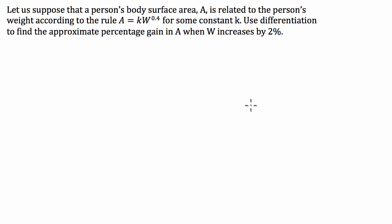It says, let us suppose that a person's body surface area A is related to the person's weight according to the rule A equals kW to the power of 0.4 for some constant k. Use differentiation to find the approximate percentage gain in A when W increases by 2%.